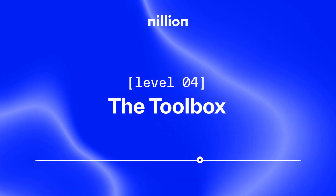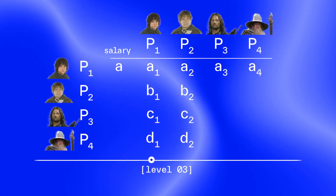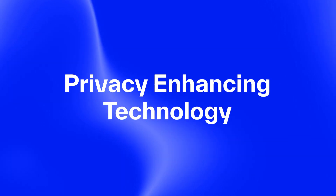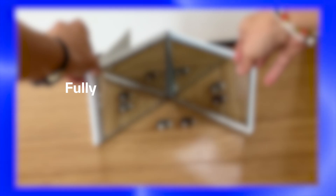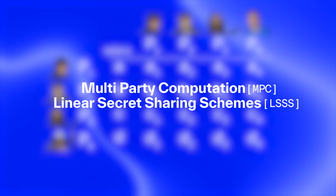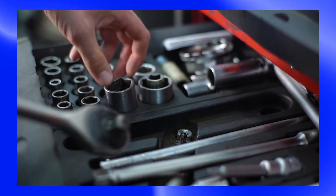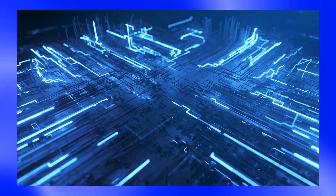Now let's raise the stakes and go to Level 4: the toolbox. I've introduced a couple of analogies — the box analogy and breaking down a secret into pieces. Each one represents a different privacy-enhancing technology, or PET. The box represents fully homomorphic encryption, or FHE. The other is what's called multiparty computation using linear secret sharing schemes, or LSSS. There are more PETs, so which one is best? The answer is all of them — it depends on the job at hand. It's like a toolbox: you may want a different combination of tools for a different job. The power of the blind computer relies on combining different PETs. We call it the PET Net.